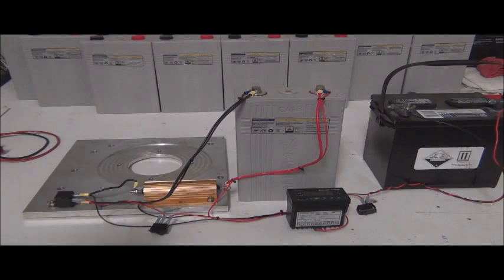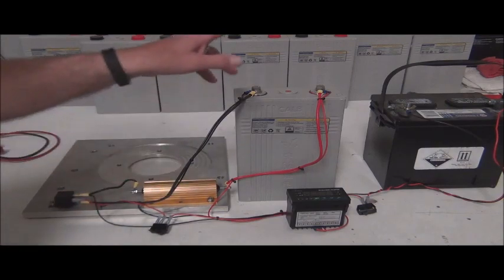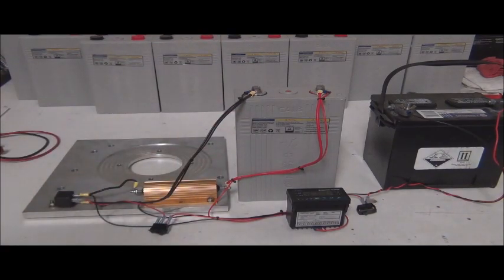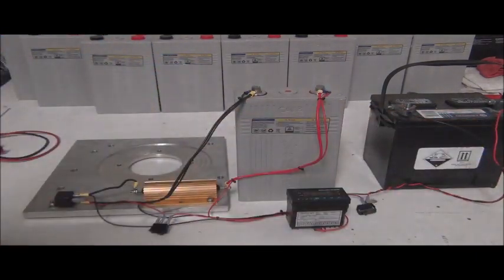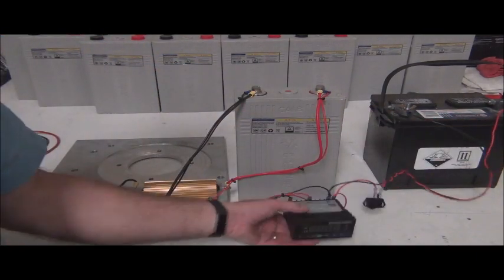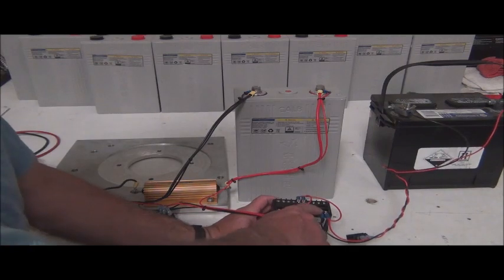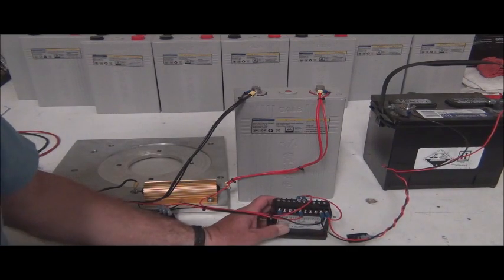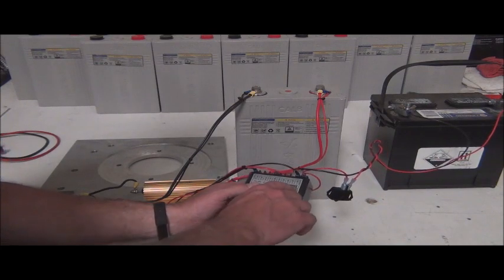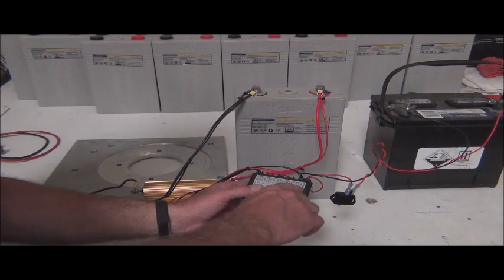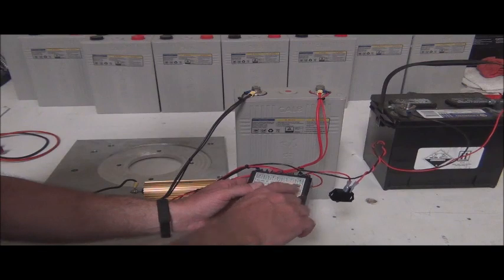So I'll show you a schematic in a moment, but we're just going to walk through this visually here in this physical example. So what we have is a positive, negative coming off our 12 volt battery. And they go to the positive, negative on the JLD 404, the 12 volt positive negative. And that's terminal one is positive, terminal two is negative.